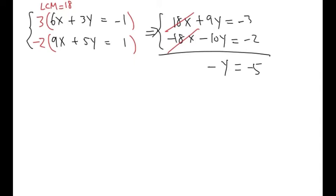Negative y equals negative 5. What I have to do is divide both sides by negative 1 because we want y to be positive. Y is going to be negative 5 over negative 1, which is positive 5.